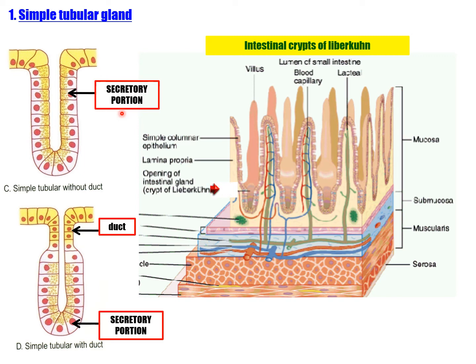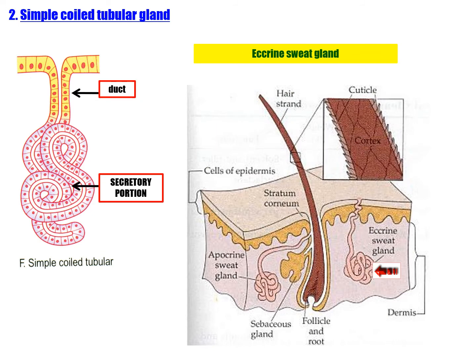Tubular glands: secretory unit is tubular in shape; the tube may be straight, coiled, or branched — example: gastric gland. Second type: simple coiled tubular gland — the secretory portion is coiled in shape. Example of this is the sebaceous gland.